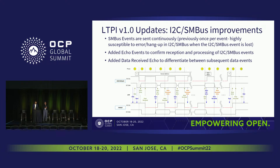That's one of the things added — for I2C events there could be some kind of event frame loss, but this eco-event mechanism confirms we don't have that issue. We also added a data received eco-event to differentiate if you have multiple subsequent data events. The chart is pretty busy, but you can see the red event, which is the data received eco-event — that tells you that you can actually process the next data event. The green one shows that on SCM we're receiving and HPM is confirming that.